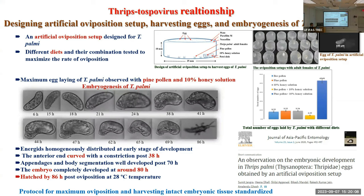To obtain more embryonic tissue, we designed an artificial oviposition setup and standardized the diet to maximize the number of eggs. Fine pollen with 10 percent honey solution yielded the maximum number of eggs compared to other diets. We also studied the embryogenesis of Thrips parvispinus. To pick the eggs, we peeled the upper layer of parafilm and collected the eggs with a camel hair brush under a microscope, allowing us to know the exact developmental stage of eggs before implanting them into cell culture.